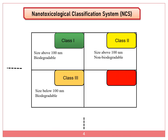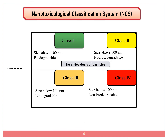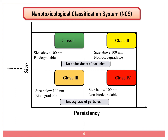Class 4 indicates particle size below 100 nm and is non-biodegradable and non-biocompatible with the body. This classification is based on the size of the nanoparticles and their interaction with human cells. Classes 1 and 2 do not cause endocytosis in the human body, while classes 3 and 4 cause endocytosis. Persistency is classified as biodegradable or non-biodegradable, and sizes are classified as above or below 100 nm.